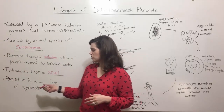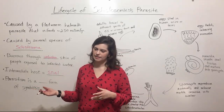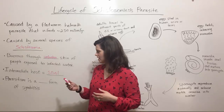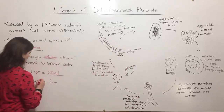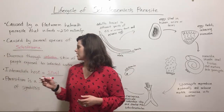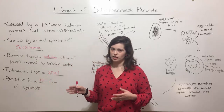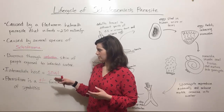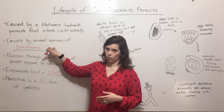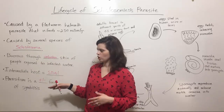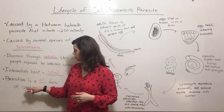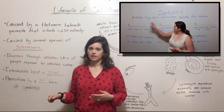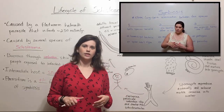Parasitism is what is known as a plus-minus form of symbiosis, because one species benefits and one species is harmed. The species that benefits is the schistosoma worm, and the species that is harmed is the human host. For more on symbiosis types including mutualism and commensalism, please see my video on the different types of symbiosis.